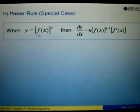For example, if we are given y equals the function of x to the power n, then dy/dx, we can take out the power n and then differentiate. We copy the function again, and then the power will be minus 1, followed by differentiation of the function.